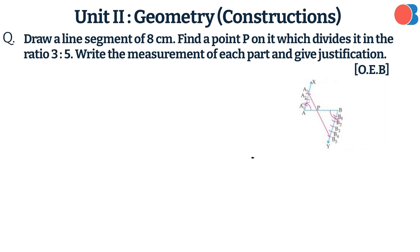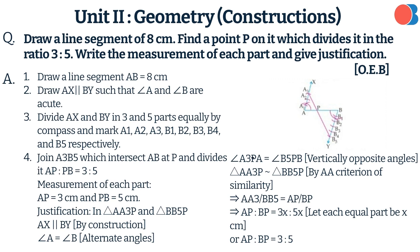Draw a line segment of 8 cm. Find the point P on it which divides it in the ratio 3:5. Write the measurement of each part and give justification. Here is the answer.